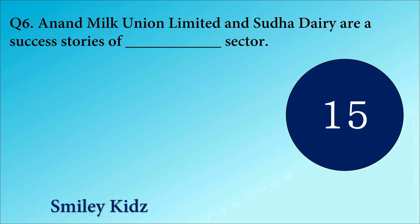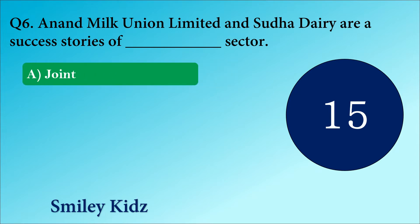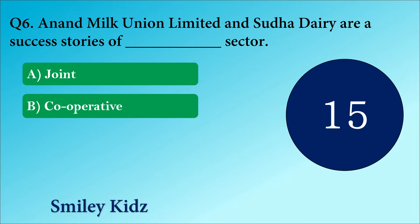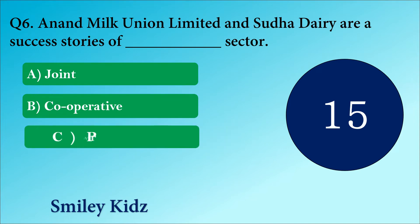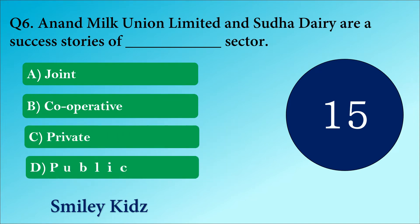Question number 6. Anand Milk Union Limited and Sudha Dairy are the success stories of Dash sector. Your options are A. Joint, B. Cooperative, C. Private or D. Public.